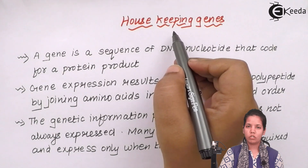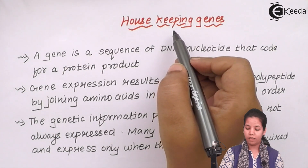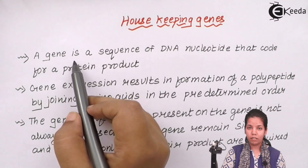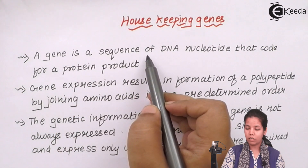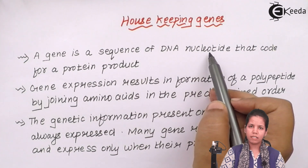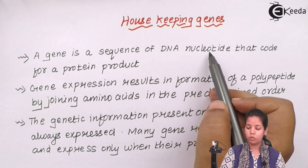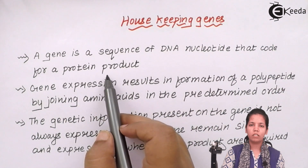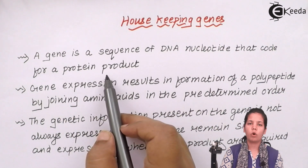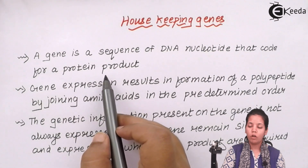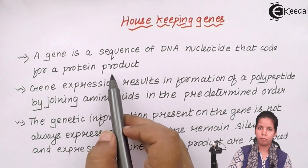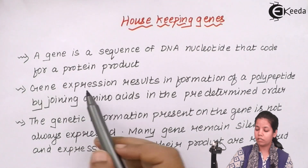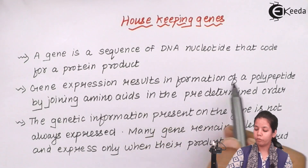Housekeeping genes are genes which are always expressed. A gene is nothing but a sequence of DNA nucleotides — that is, a sequence of A, T, G, C code — that codes for a protein product. Basically, a gene is the genetic information, the detailed instructions for the synthesis of a protein molecule. Genetic expression, or gene expression, results in the formation of a polypeptide.